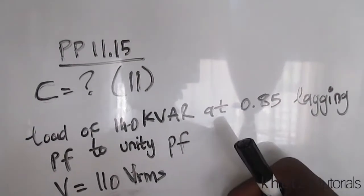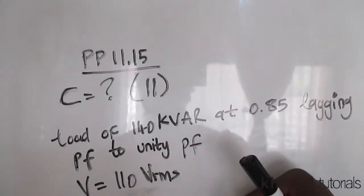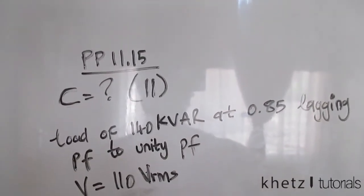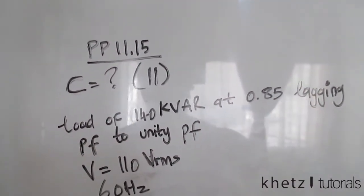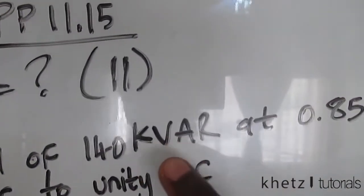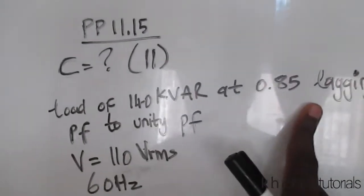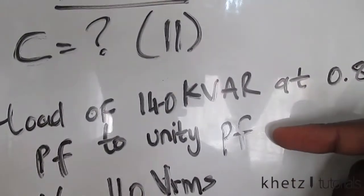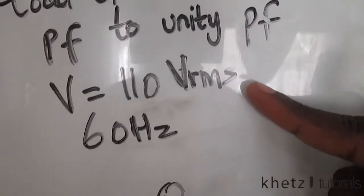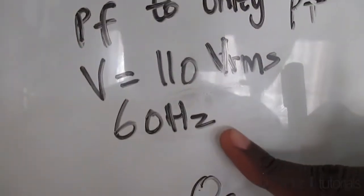Welcome to CATS Tutorials and in this video I'll be covering practice problem 11.15. We are asked to find the value of the parallel capacitance which will correct a load of 140 kVAR at 0.85 lagging power factor to unity power factor, given the supplied voltage of 110 VRMS at 60 hertz.